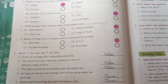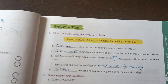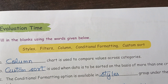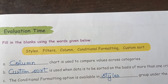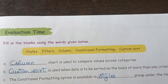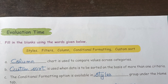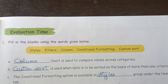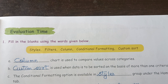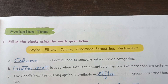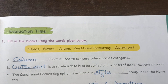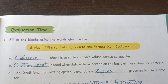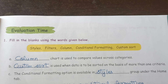Now next is fill in the blank. A blank chart is used to compare values across categories — it is column chart. Blank is used when data is to be sorted on the basis of more than one criteria — the answer is custom sort.